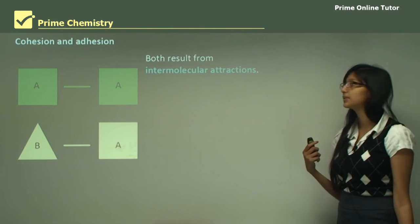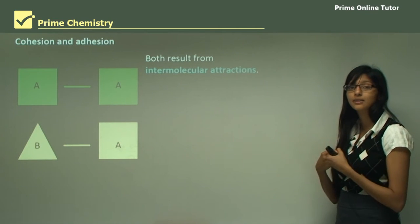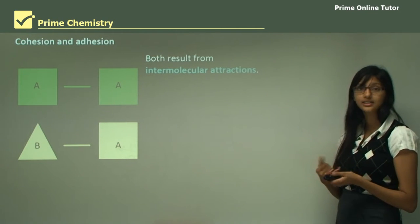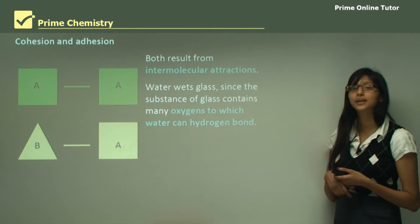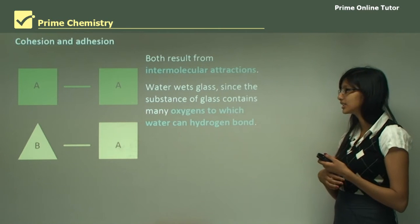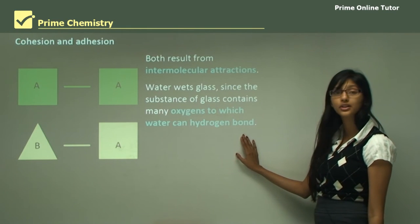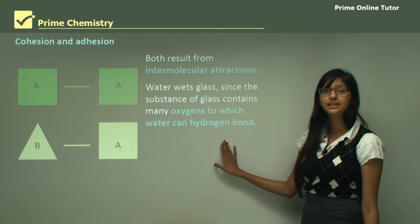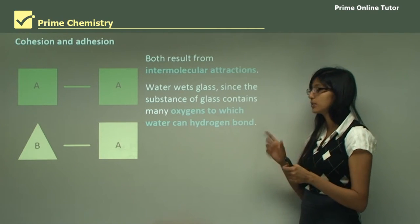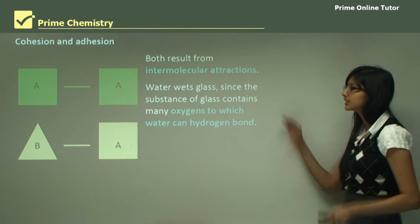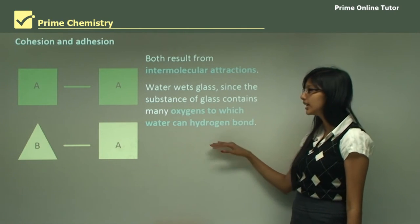Both cohesion and adhesion result from intermolecular interactions. The forces that exist between two different particles that attract them together are known as intermolecular attractions. Water wets glass because the substance of glass contains many oxygen atoms to which water can form hydrogen bonds. Hydrogen bonding is an intermolecular force between hydrogen and electronegative atoms such as oxygen or nitrogen. So water wets glass because of an adhesive force driven by hydrogen bonding.